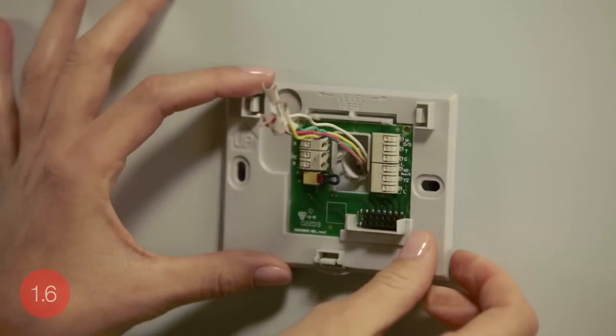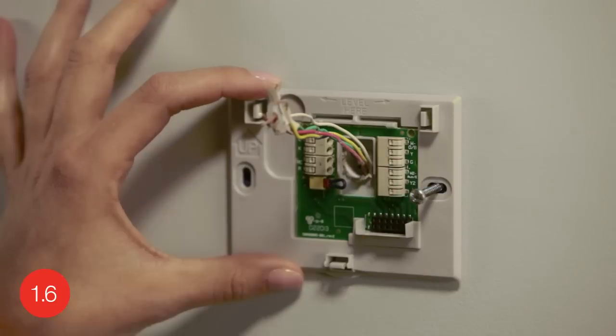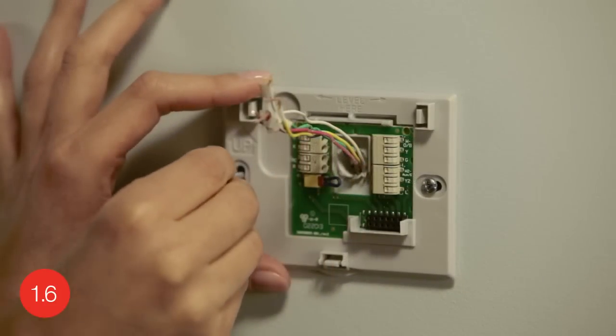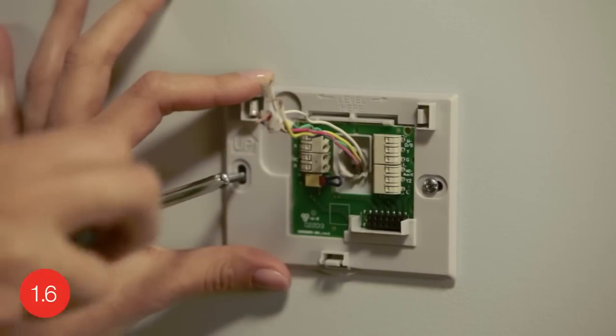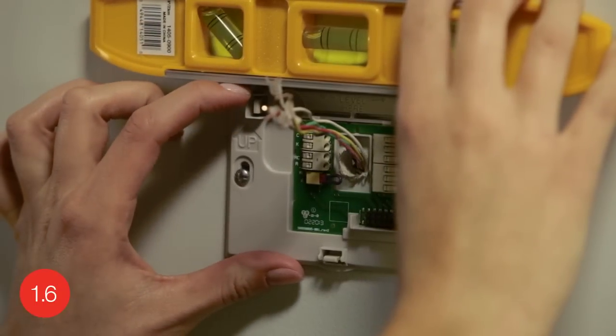Next, after inserting the anchors, it's time to attach the wall plate. Position the wall plate so its holes are over the anchors and insert the screws. Use a screwdriver or drill to partially tighten the screws, then level the wall plate again before tightening up the screws.